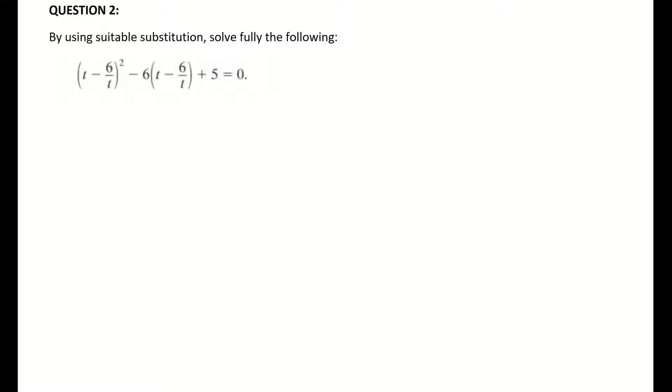What I'm going to do here is I'm going to substitute u in for t minus 6 over t. So I'm taking my t minus 6 over t and I'm going to change that or substitute that in with a letter, and I'm going to call it u. You can use any letter to represent it.